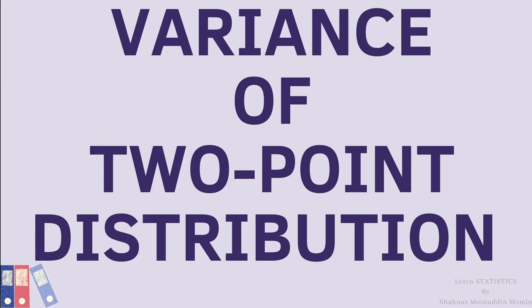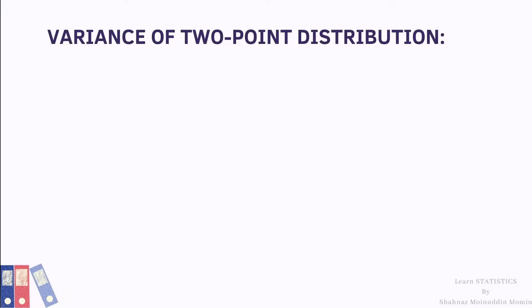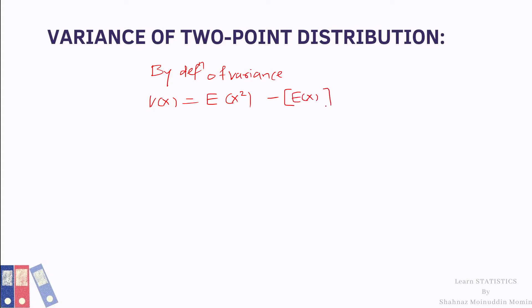Now we shall see what is the variance of two-point distribution. By definition of variance, Var(X) is equal to E[X²] minus (E[X])².